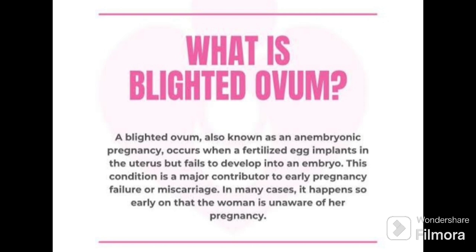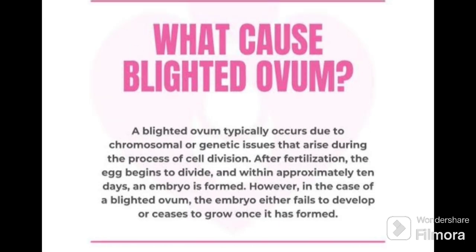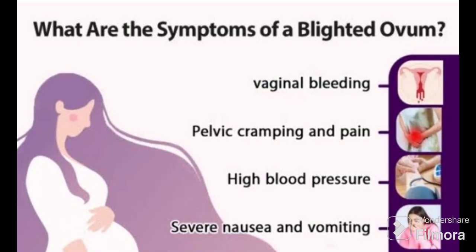This condition is a major contributor to early pregnancy failure or miscarriage. In many cases it happens so early that the woman is unaware of her pregnancy. Blighted ovum typically occurs due to a chromosomal defect or genetic issue that arises during the process of cell division. After fertilization the egg begins to divide, and within approximately 10 days an embryo is formed. However, in the case of a blighted ovum the embryo either fails to develop or stops growing once it has formed.